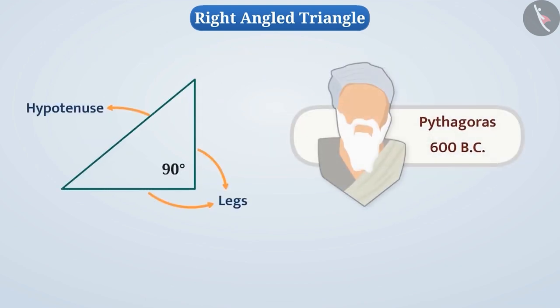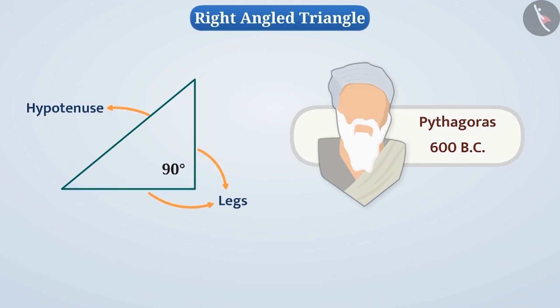Pythagoras, a great mathematician and a famous philosopher of the 6th century, discovered an important property related to the hypotenuse and the remaining sides of the right angle triangle, known as the Pythagoras property. Let's understand this property.